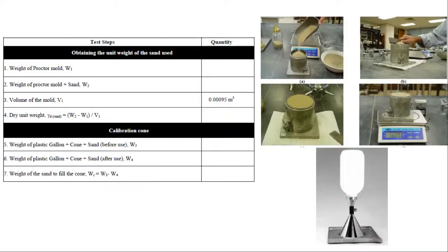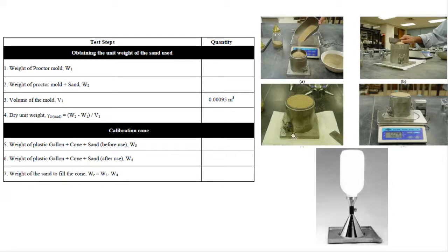Let's start the procedure. First, we need to obtain the unit weight of the sand used. In the sand cone method, we typically use Ottawa sand for its unique properties — its grain size is almost constant and its properties remain unchanged due to its grain size distribution. We use the standard proctor mold: we weigh the empty mold, fill it with sand in a loose condition, and weigh again. The difference gives the weight of sand, and since the proctor mold volume is constant, we can determine the dry unit weight of the sand.